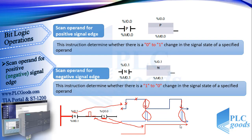Pay attention: a set instruction is used in this program, so the Q 0.0 output remains 1 after the first pulse.